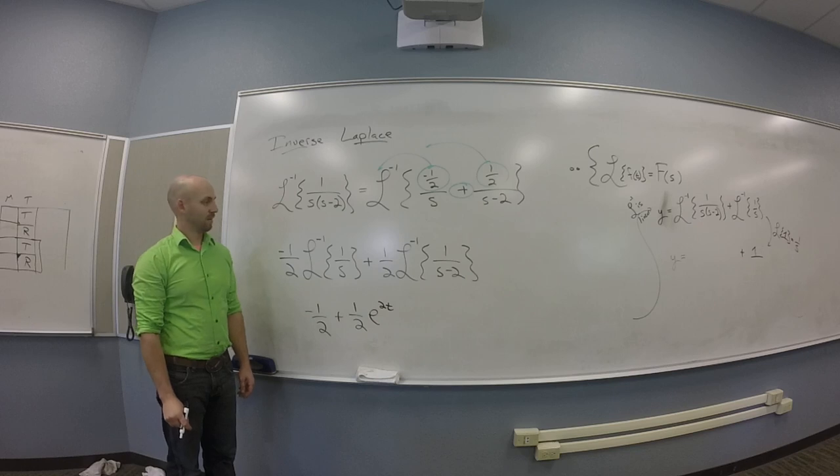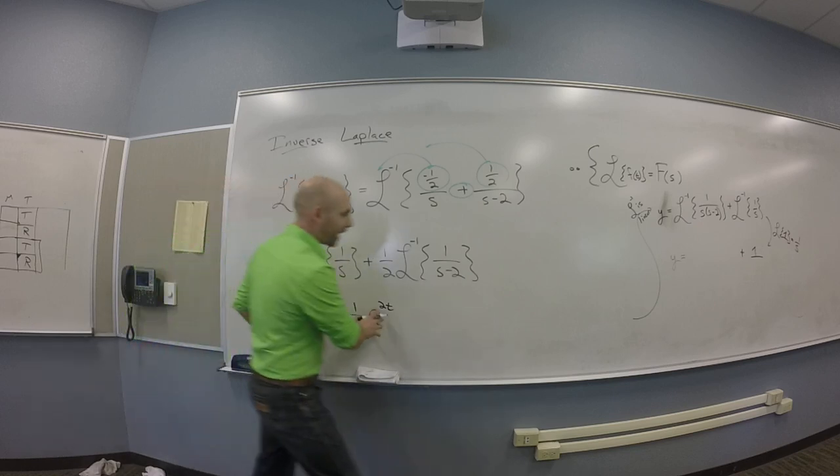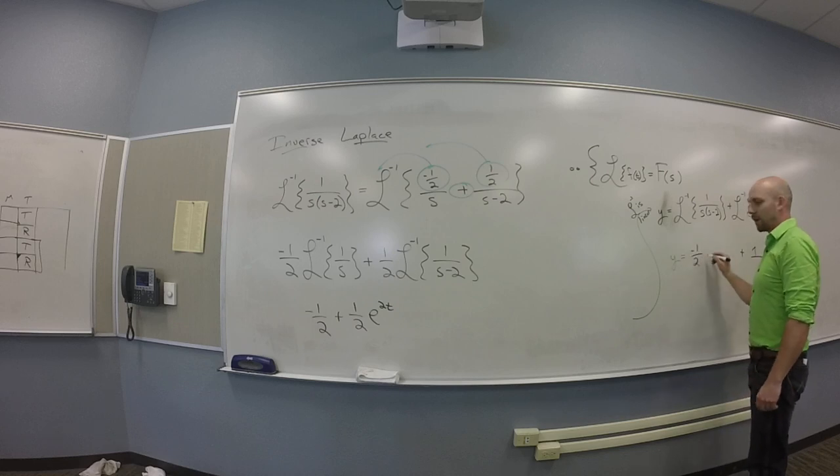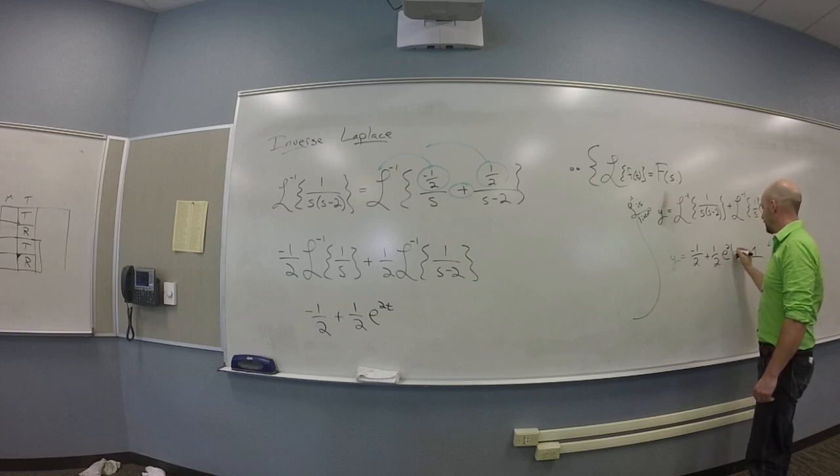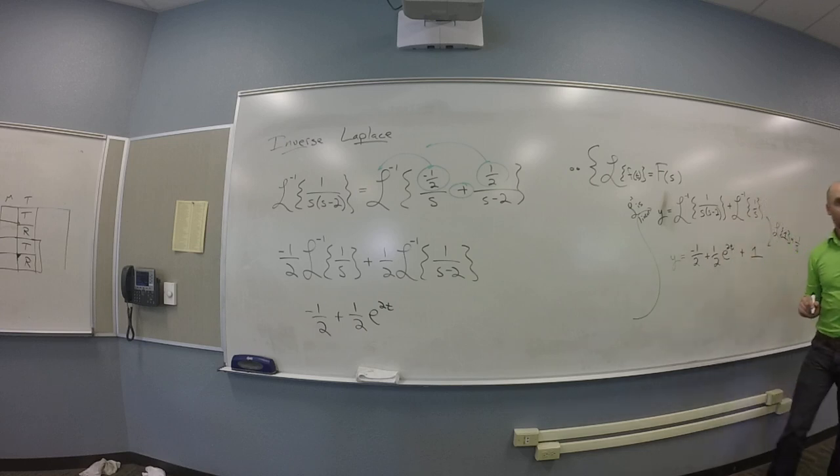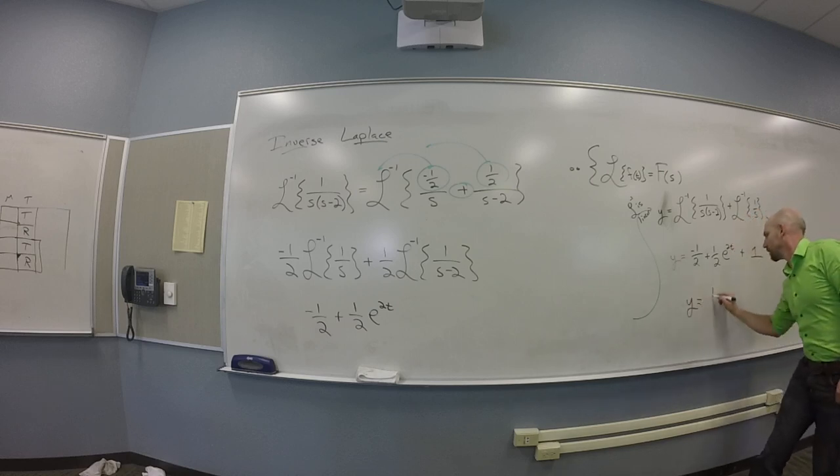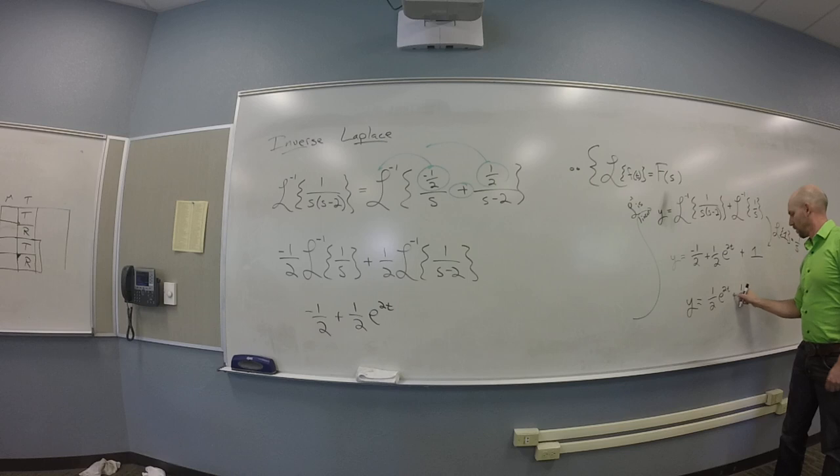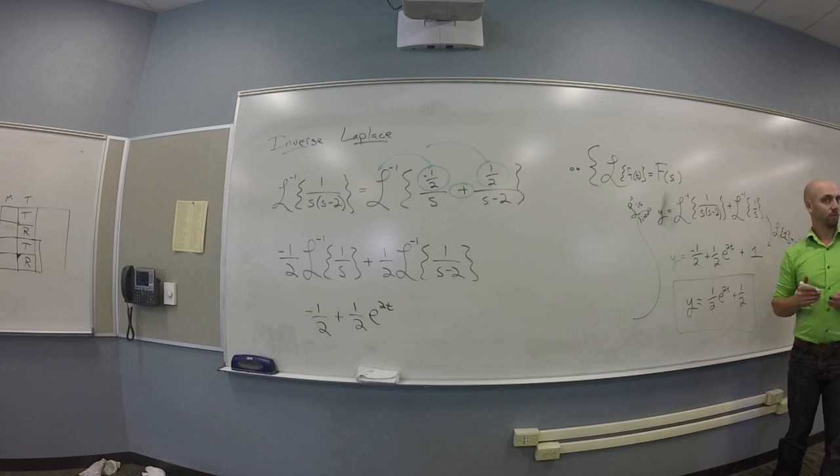And then you go look at the table. So you go look at the table for Laplace transform that gives you 1 over s. You find 1. So you get minus 1 half times 1 plus 1 half e to the 2t. That's 1 from the first thing. And then you take that information, you walk it over here to where you were working before, and you get minus 1 half plus 1 half e to the 2t. Combined like terms. So you get your y is 1 half e to the 2t plus 1 half. So IVP is solved, checked.